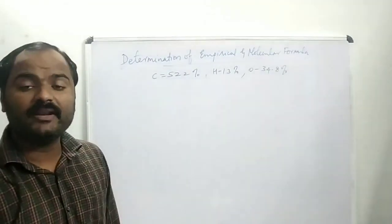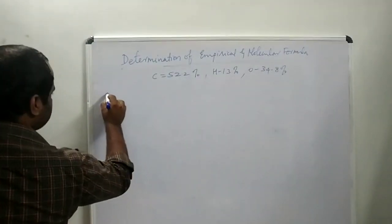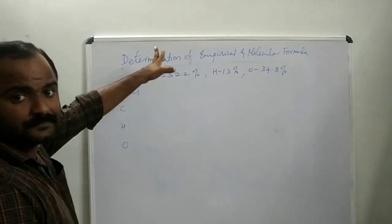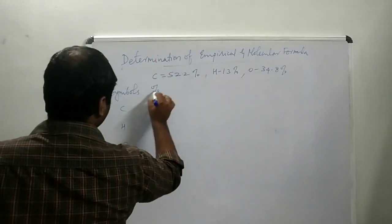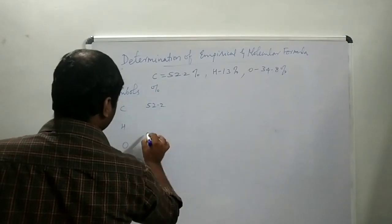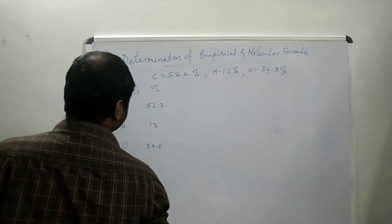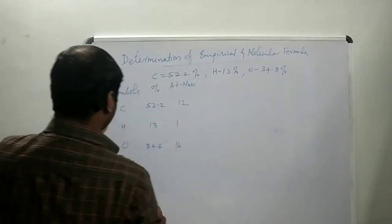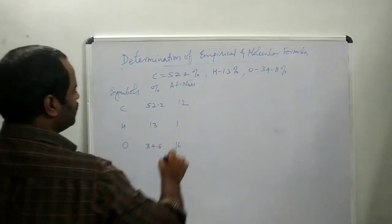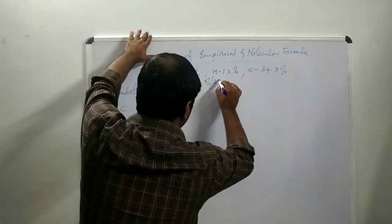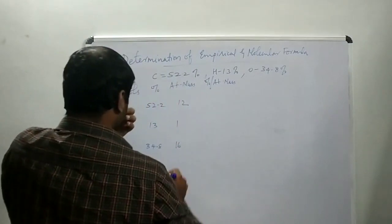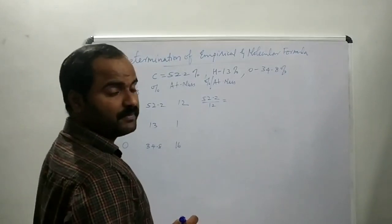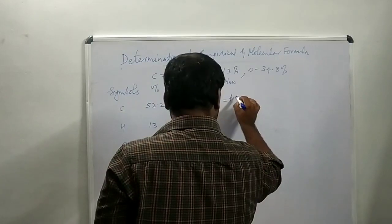First we write the symbols: carbon, hydrogen, oxygen. Then the percentage: C = 52.2%, H = 13%, O = 34.8%. The atomic masses are C = 12, H = 1, O = 16. Now calculate percentage divided by atomic mass: for C, 52.2 ÷ 12 = 4.35; for H, 13 ÷ 1 = 13; for O, 34.8 ÷ 16 = 2.175.